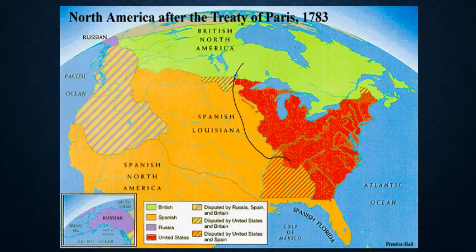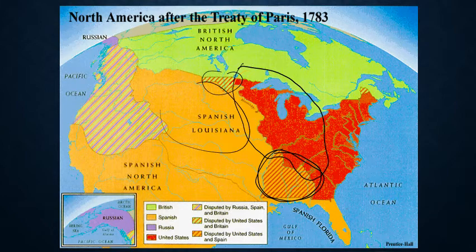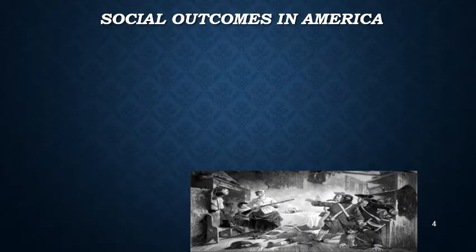All this new territory here is now controlled by the United States. This area is disputed between the United States and Spain but ultimately gets worked out later — all good for us. These other territories also get worked out later. We've added a ton of new land to the United States of America.